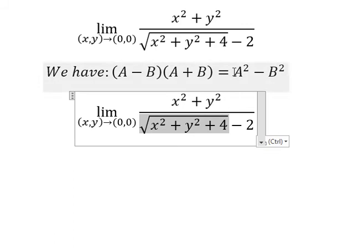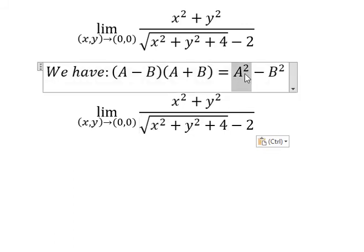the square root. That's why we need to have the power 2 here to create A squared minus B squared. We need to multiply by A plus B on numerator and denominator.